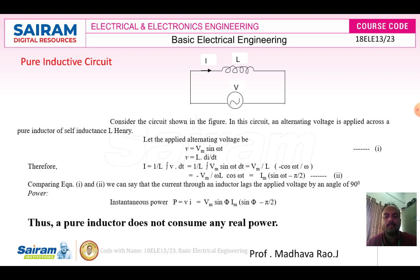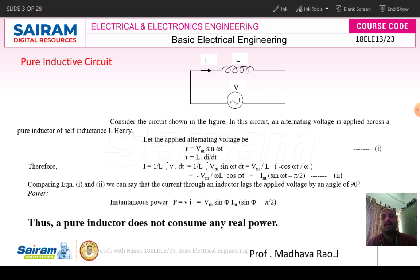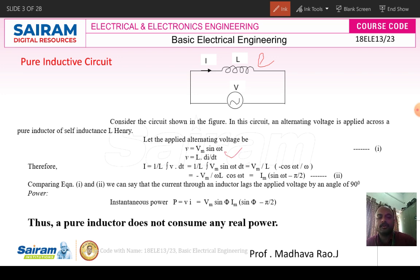Let the applied alternating voltage V be equal to Vm sin(ωt). In an inductor, V is equal to L di/dt. Current flows, magnetic flux will be produced, and due to the magnetic flux an EMF will be produced. That EMF will oppose the supply voltage according to Lenz's law. Now, if you take V equal to L di/dt, to get the current we need to integrate both sides. After integration, you will get i equal to Im sin(ωt − π/2).